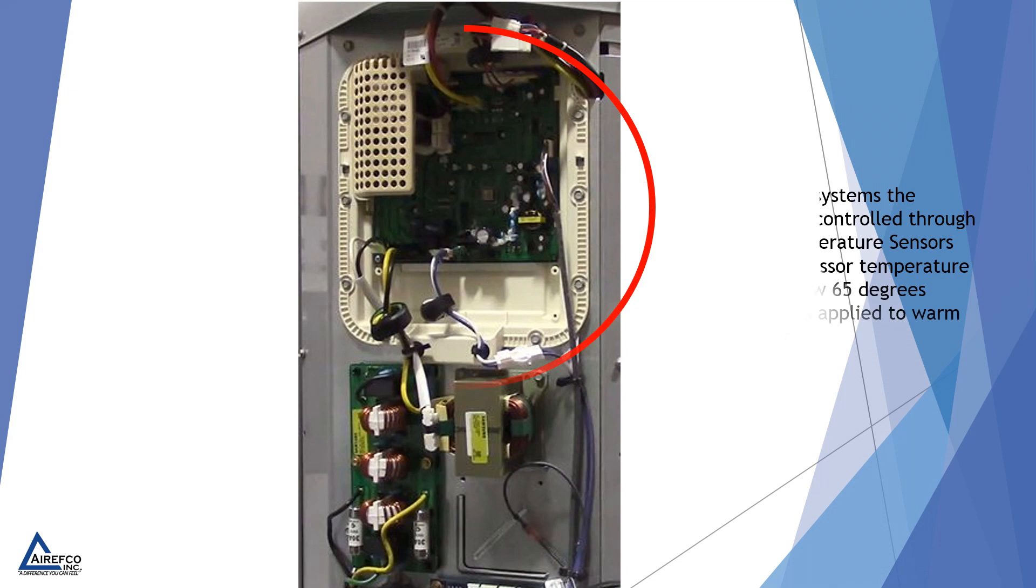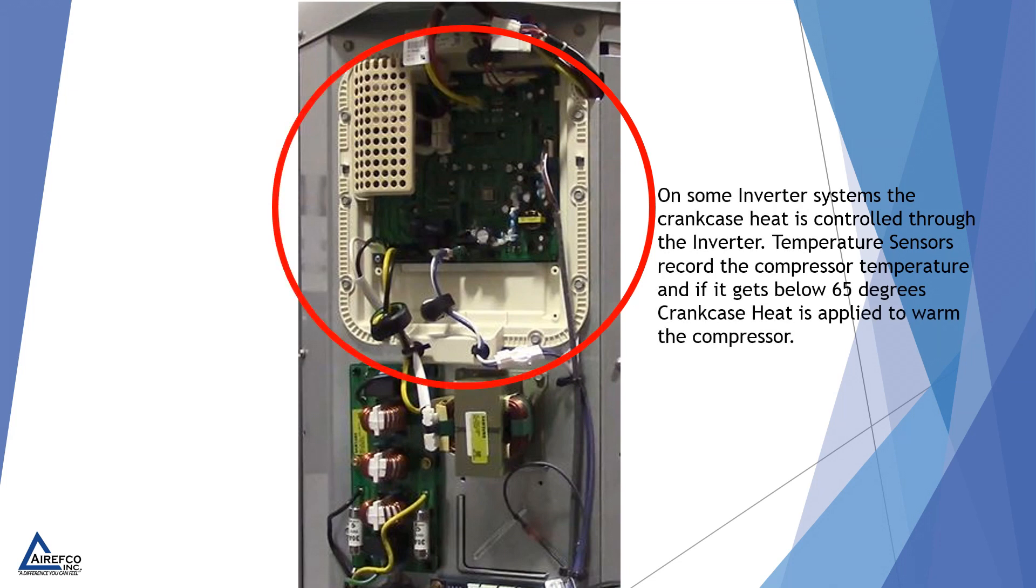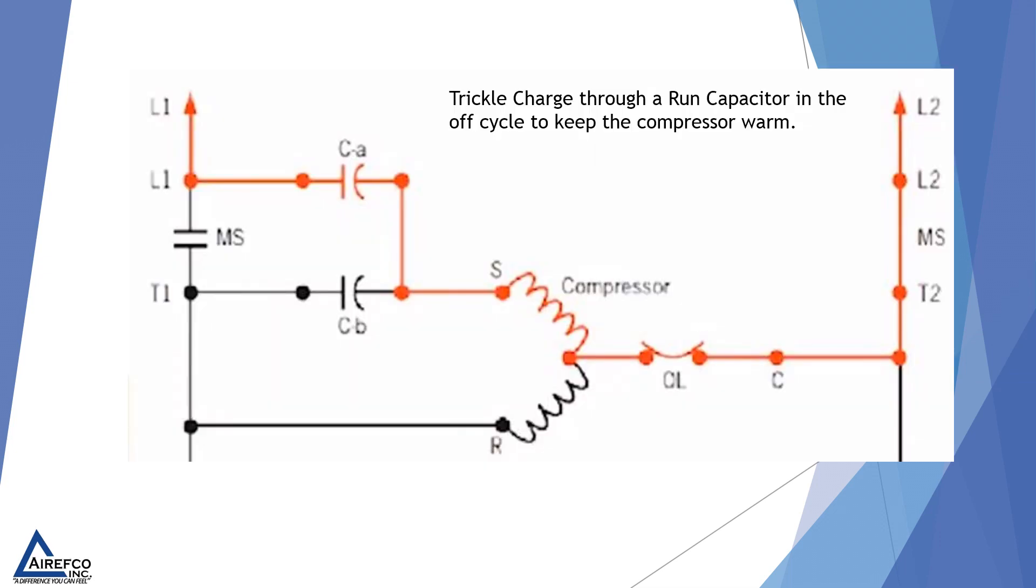On some inverter systems, the crankcase heat is controlled through the inverter. Temperature sensors record the compressor temperature, and if it gets below 65 degrees, crankcase heat is applied to warm the compressor.